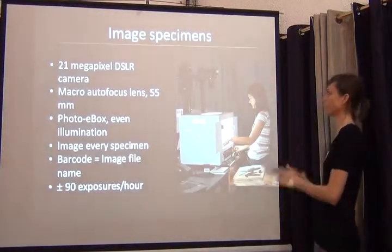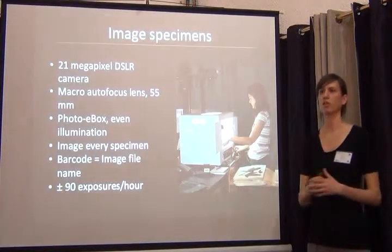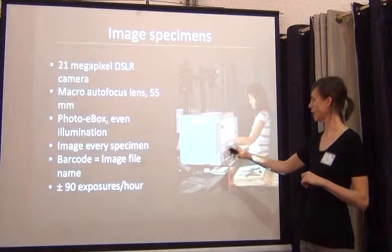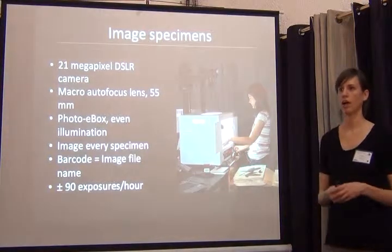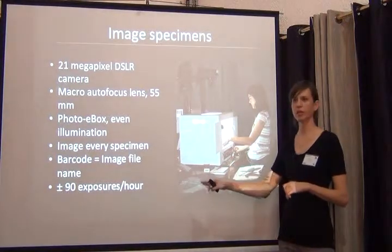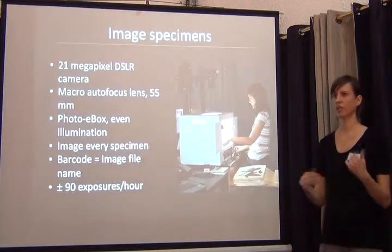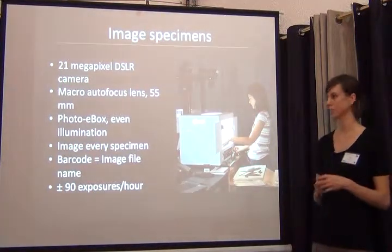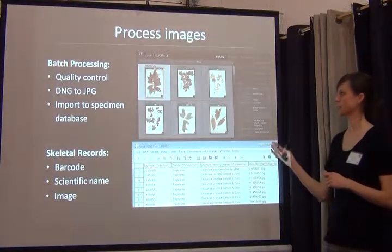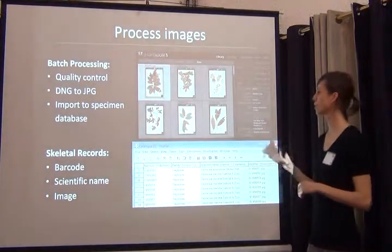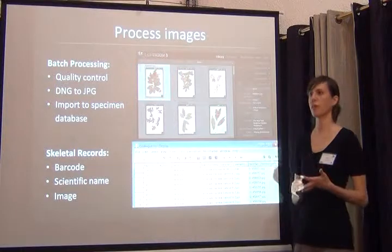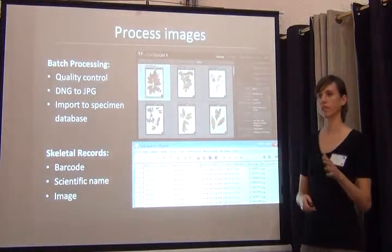Then the specimens go to get imaged. We're using light boxes to image every single specimen. Every image produced gets the barcode number at that time, so we'll have a barcode number in our skeletal record and a barcode number on the image file we're creating. We're doing about 90 exposures an hour — some staff are going up to 150 specimens an hour. Then we process the images with batch processing in Lightroom, and we link up the records with the barcode number, the scientific filed-as name, and an image file — all together in our database.